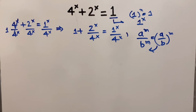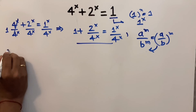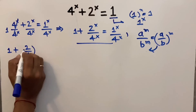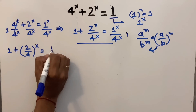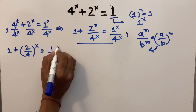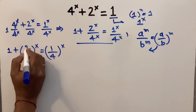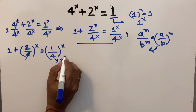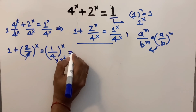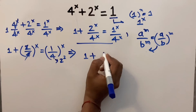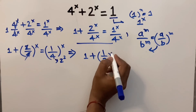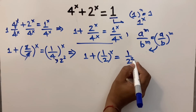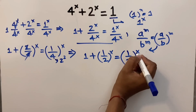After applying this rule, the equation becomes 1 plus (2 divided by 4) to the power x equals (1 divided by 4) to the power x. So here it becomes 1 plus (1/2)^x. Since 4 equals 2 squared, the equation becomes 1 plus (1/2)^x equals (1/2^2)^x, which is (1/2)^(2x).